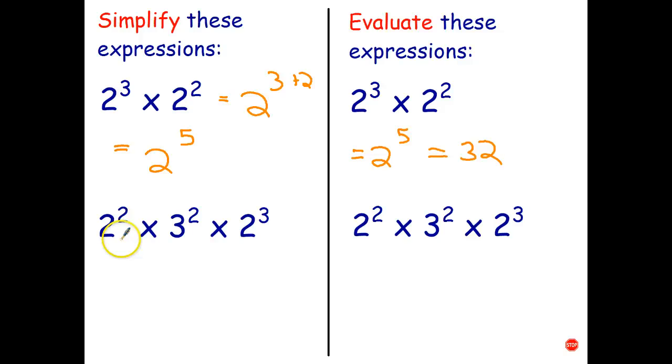Okay, let's see how you went. Once again, index laws only apply if the bases are the same. So that's going to be 2 to the power of 2 plus 3, which is 2 to the power of 5, and just times 3 squared. So that's the simplified expression for that.